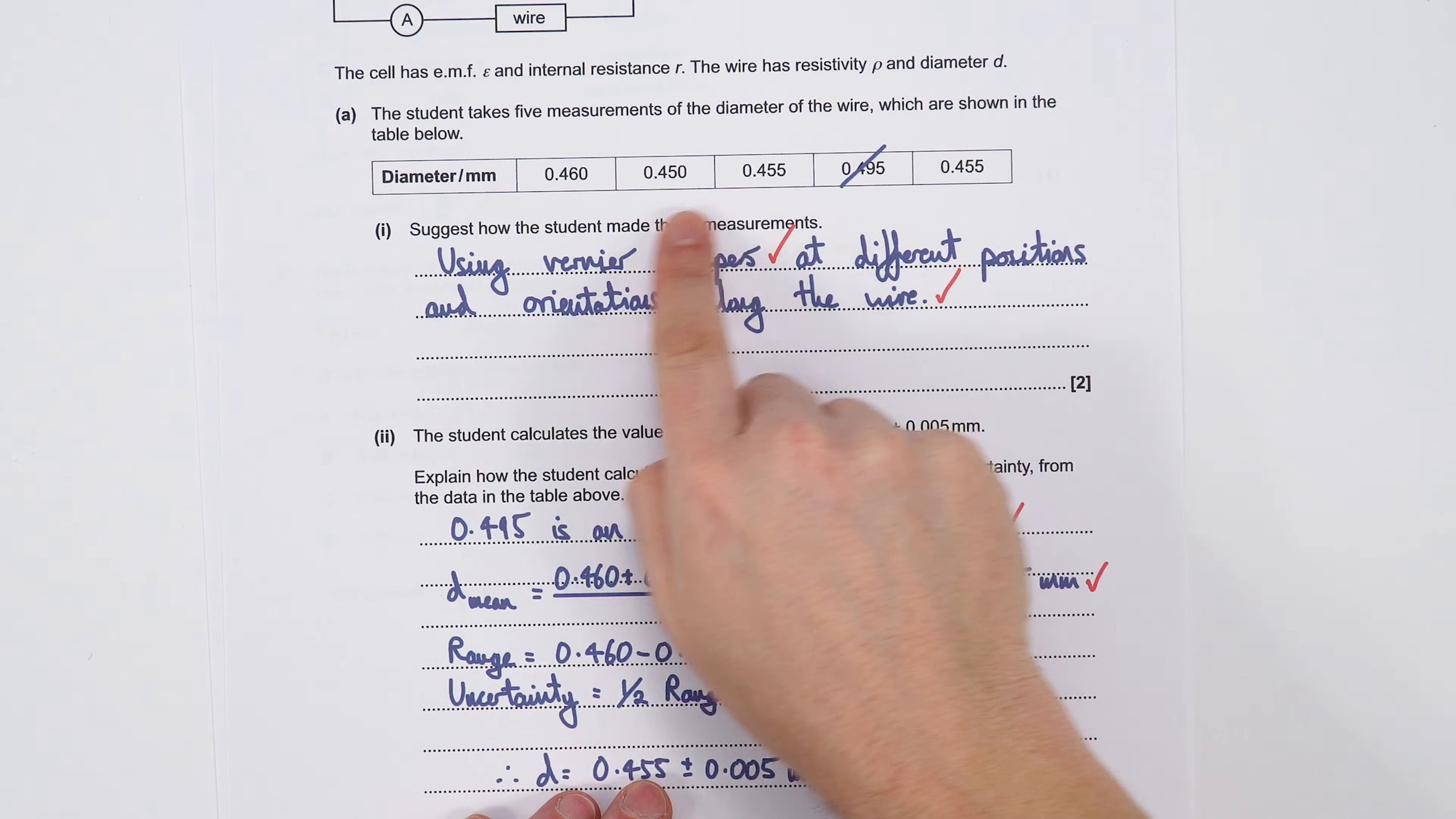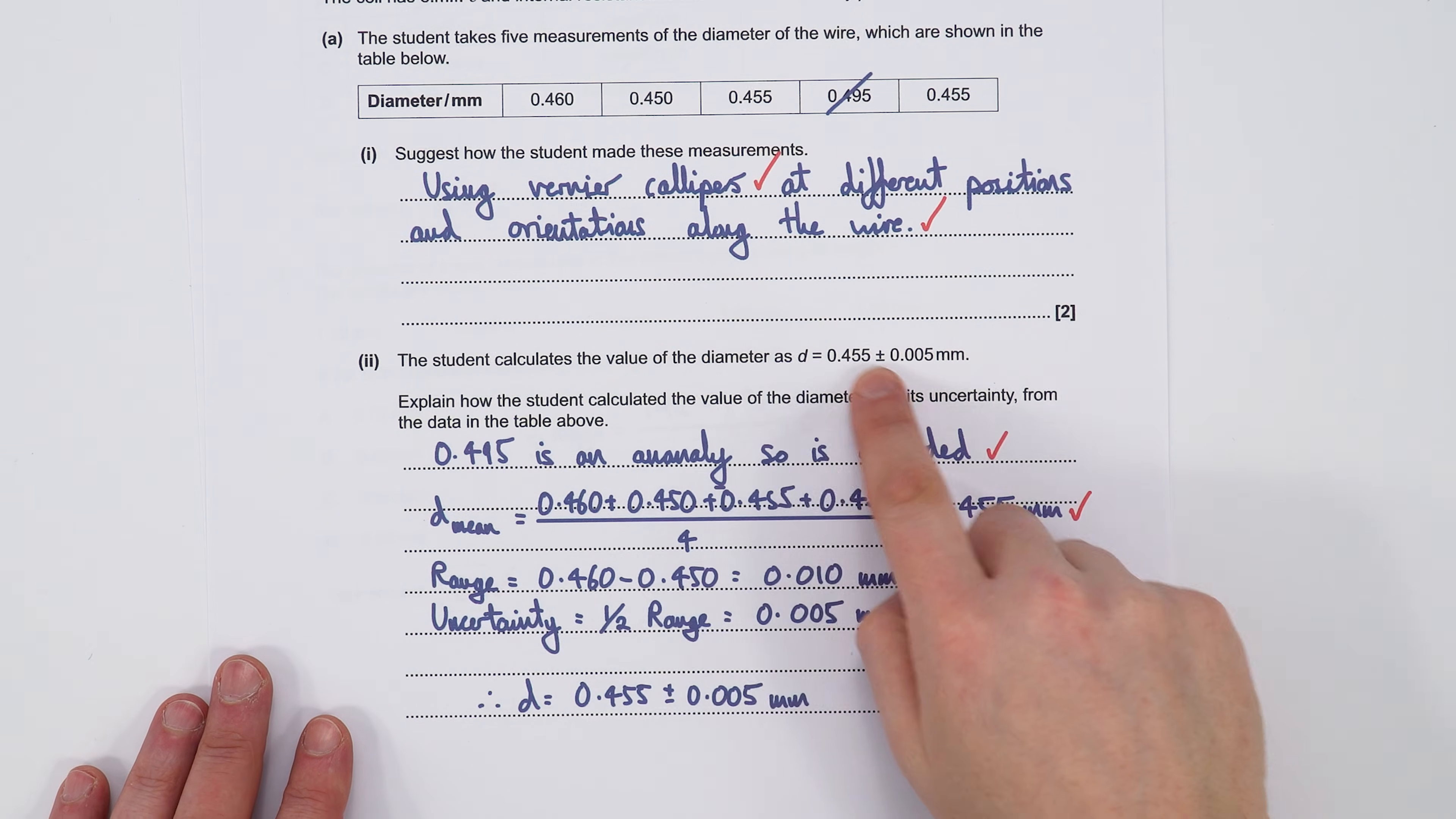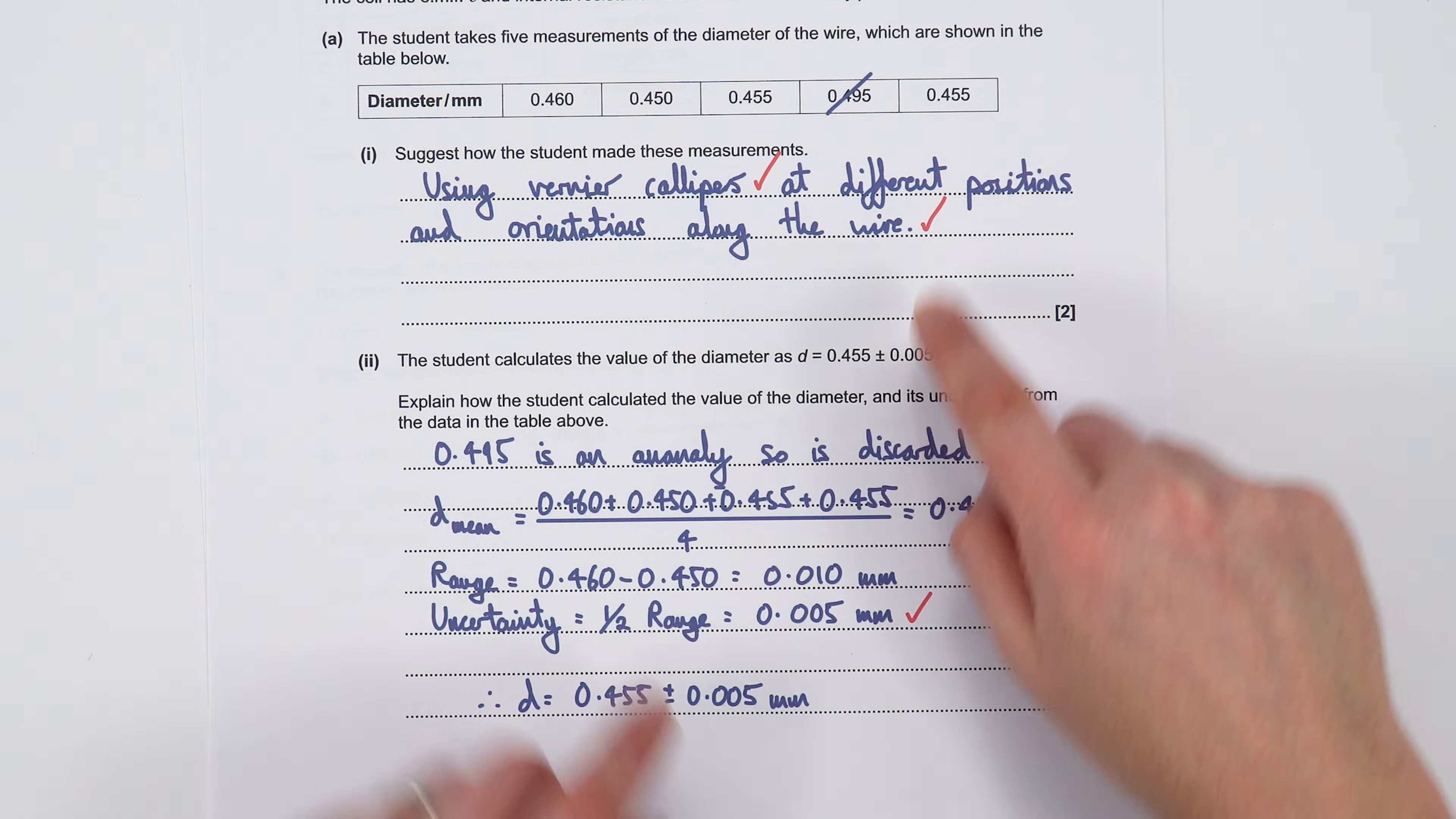Here they've got a question about how they could make those measurements, so maybe use vernier calipers and then you do this reading at different orientations to make sure it's circular in cross-section along the length of the wire. And then of course there's a question about how they actually worked out the diameter which is just the mean value and then why is this the absolute uncertainty because it's half the range.